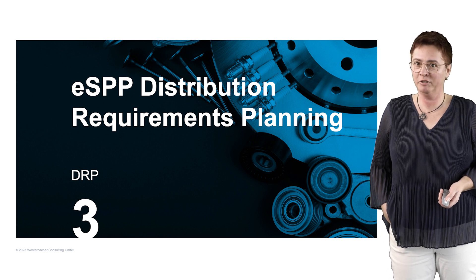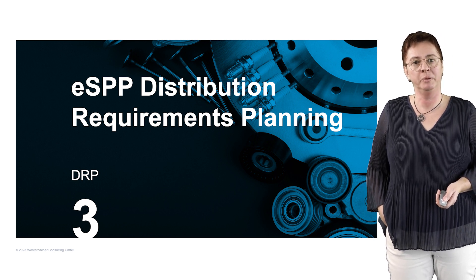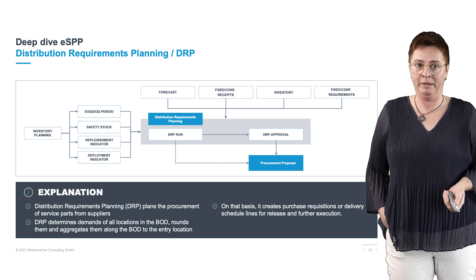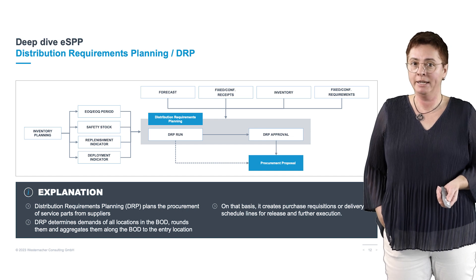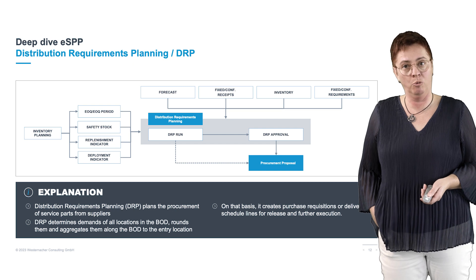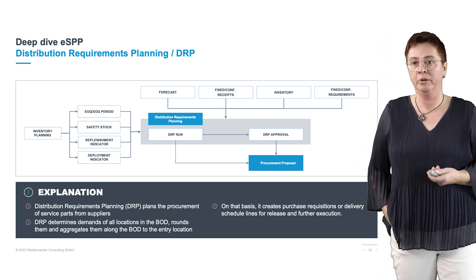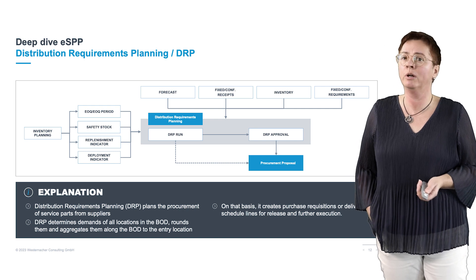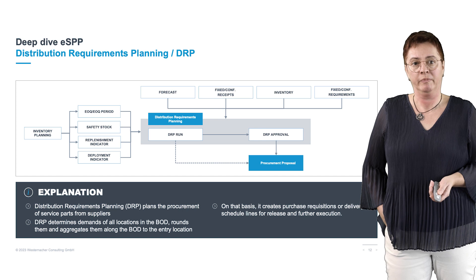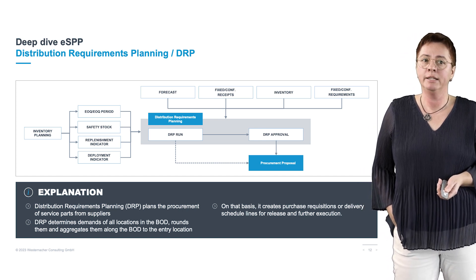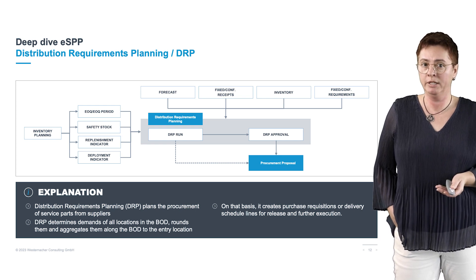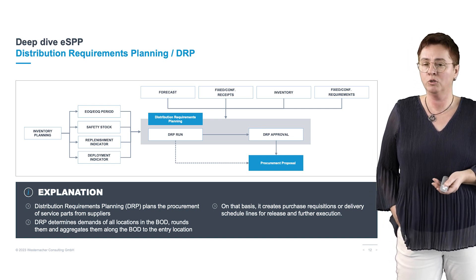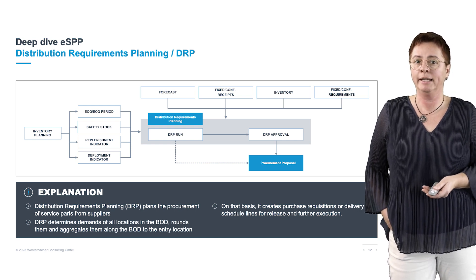This video clip deals with the topic of Distribution Requirements Planning in ESPP. Distribution requirements planning means what do we really need to order from our suppliers and at what point in time. The main inputs to this process are the forecast, the inventory on stock, and from the inventory optimization process we get the safety stocks and for rounding purposes the economic order quantity. The planning service calculates the net demand at each location of the BOD starting from the lowest level up to the top, so we know exactly what needs to be procured from which supplier and at what point in time.